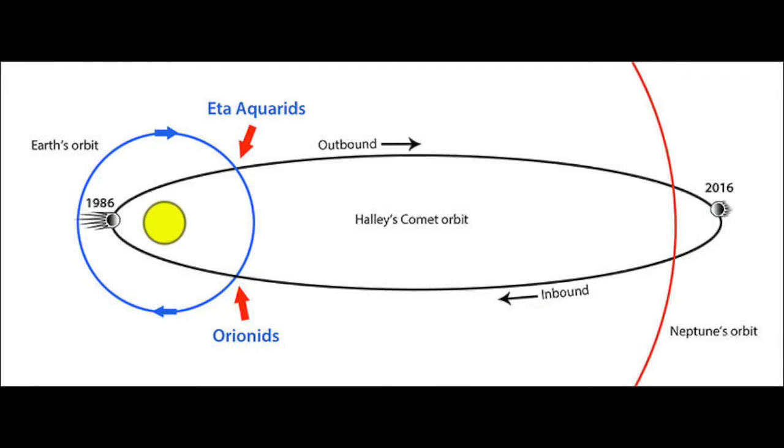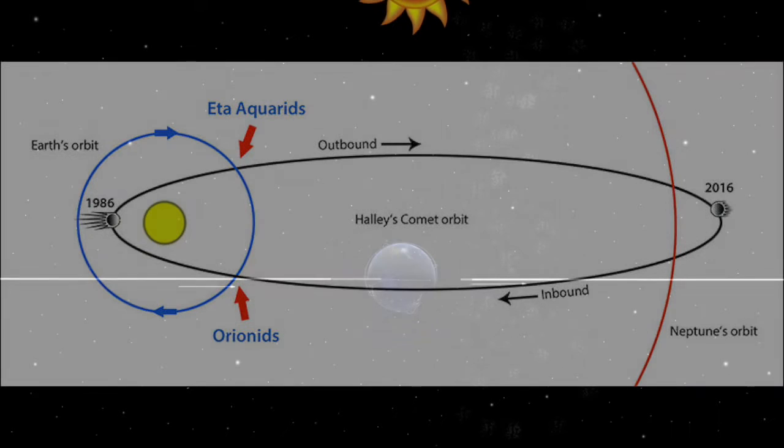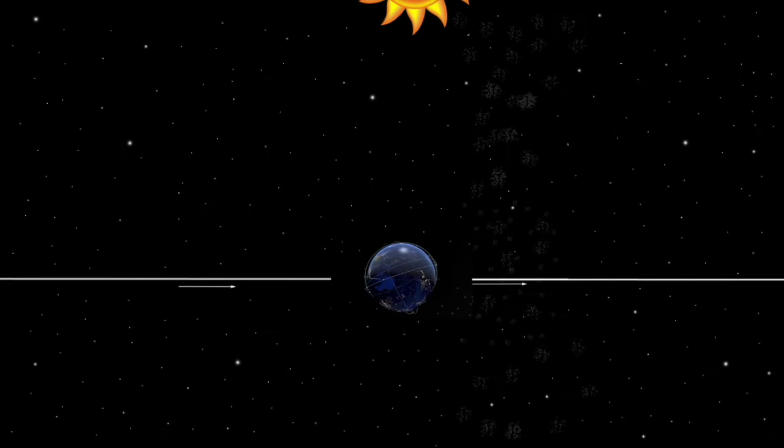You may ask, but where does this have anything to do with the globe Earth? As you can see, as the Earth plows through these clouds, head-on in its orbit around the Sun, only the forward-facing half of the planet is impacted by the shower. Half of the Earth is actually facing backwards, and does not impact the debris.